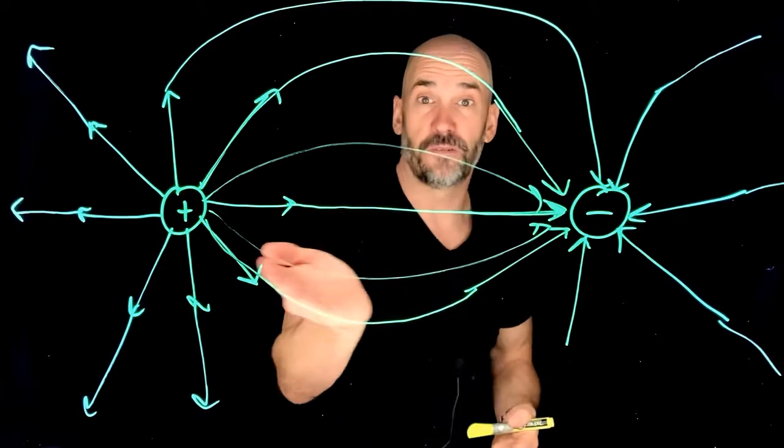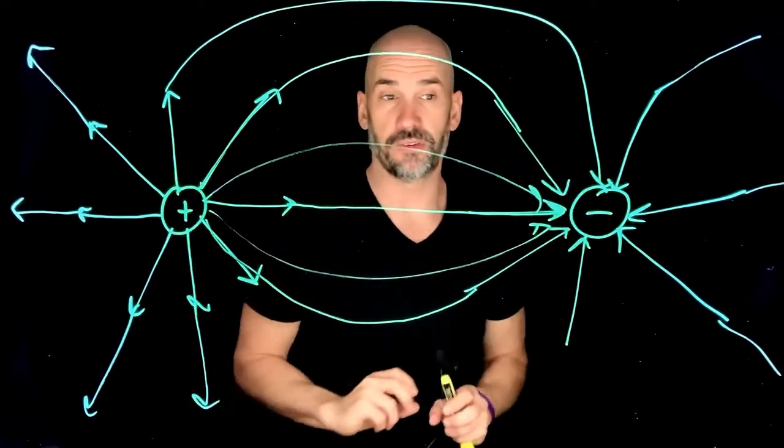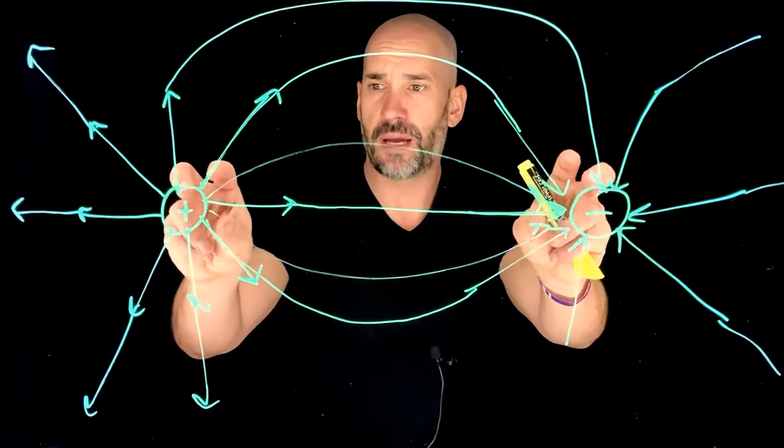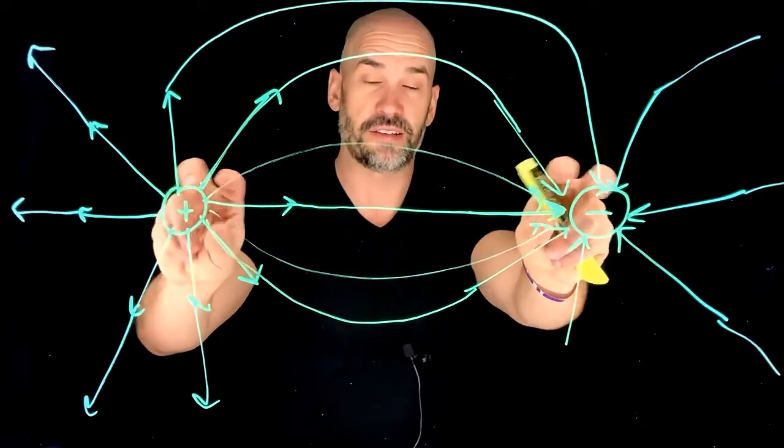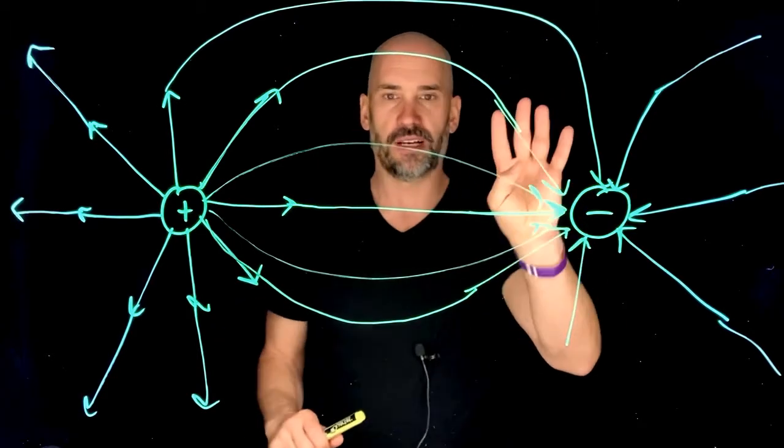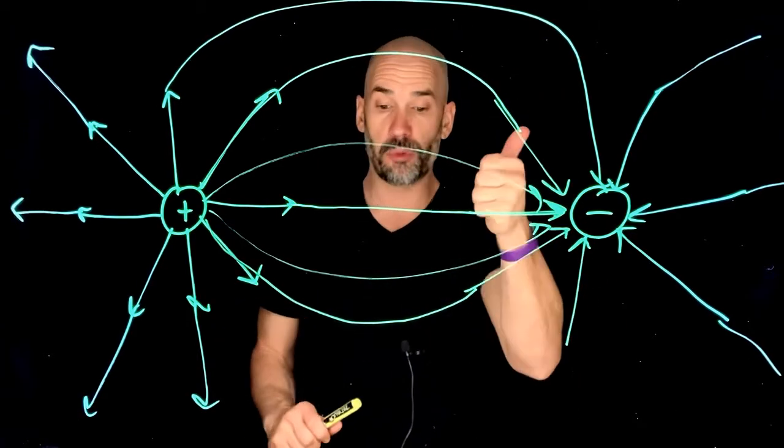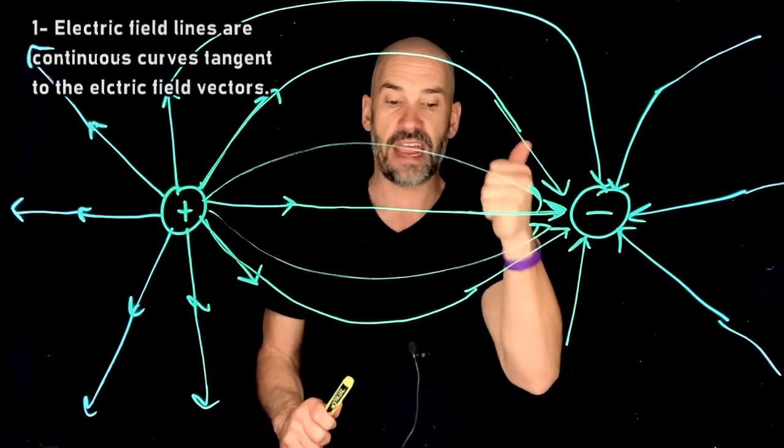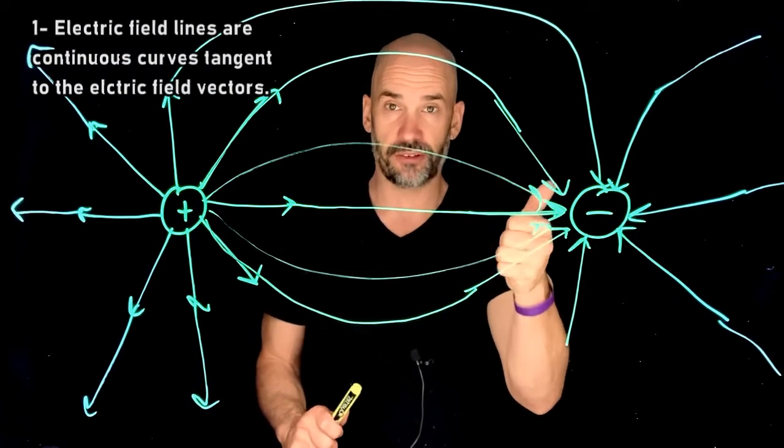These are the electric field lines of two charged particles. By the way, two charged particles that are opposite of each other, you may have heard this from chemistry, it's called a dipole. So this is technically a dipole here. All right, what are those four rules of electric field lines? Rule number one,